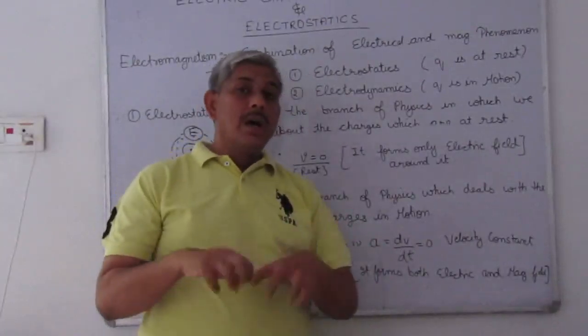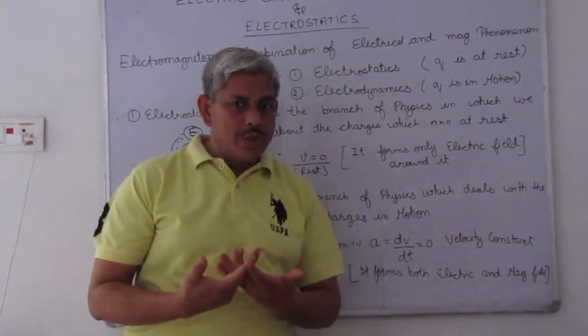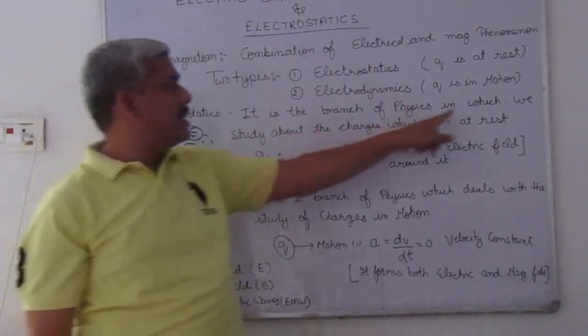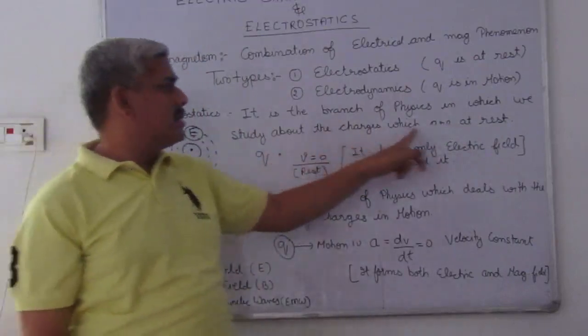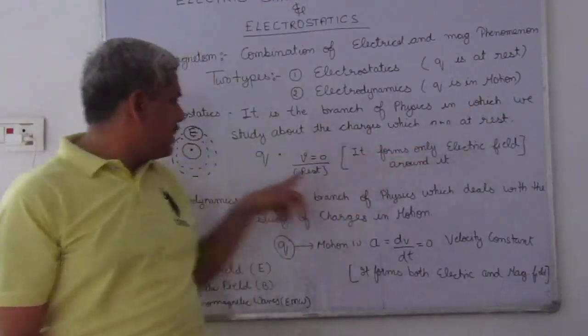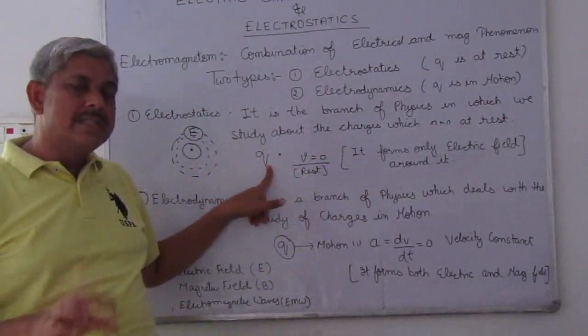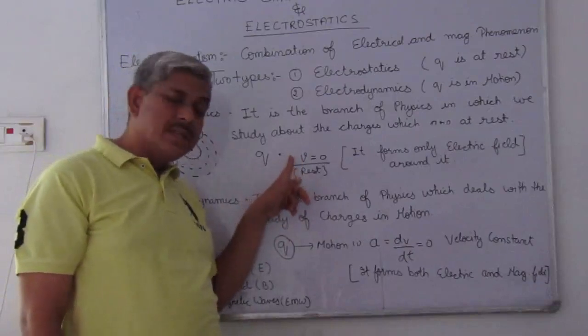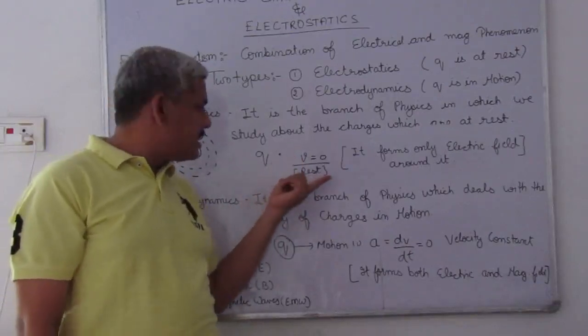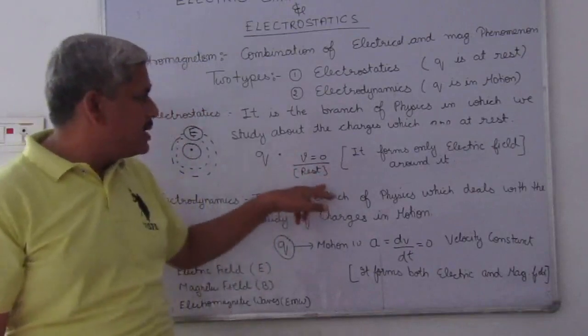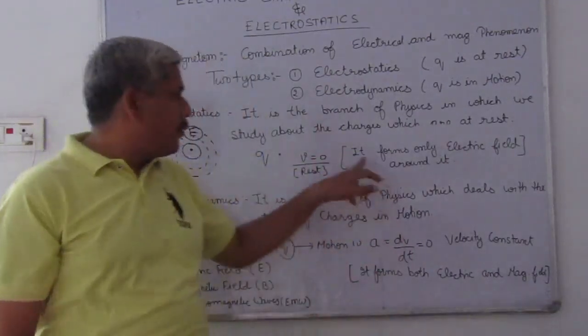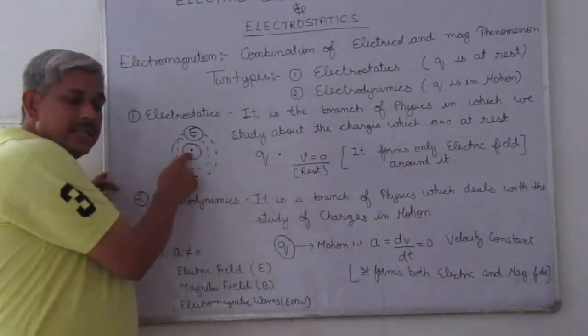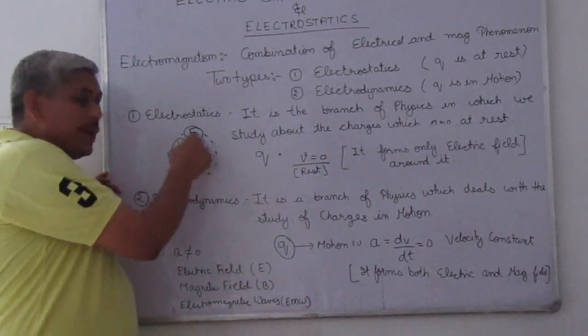Now, I am describing these two terms in a short form. Electrostatics - it is a branch of physics in which we study about the charges which are at rest. That means when Q, the test charge, when Q is at rest, that means its velocity is zero. When the charge is at rest, it forms only electric field around it.